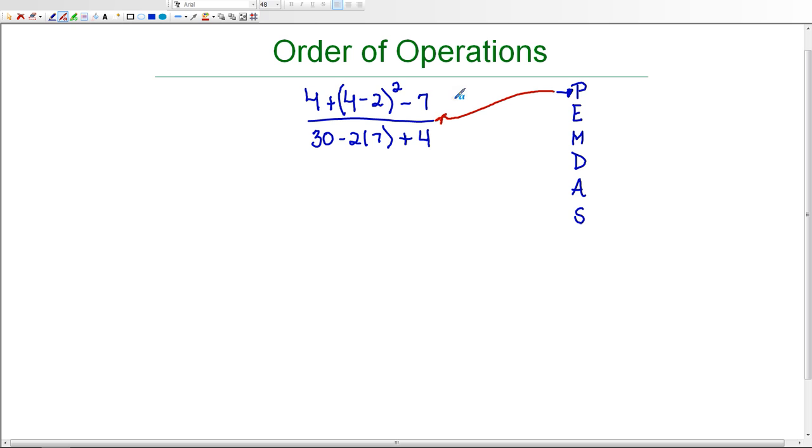So this bar here, the fraction bar, is considered a grouping symbol because we have an expression in the numerator and an expression in the denominator. Because of that we need to make sure that we group our numerator together and our denominator together.